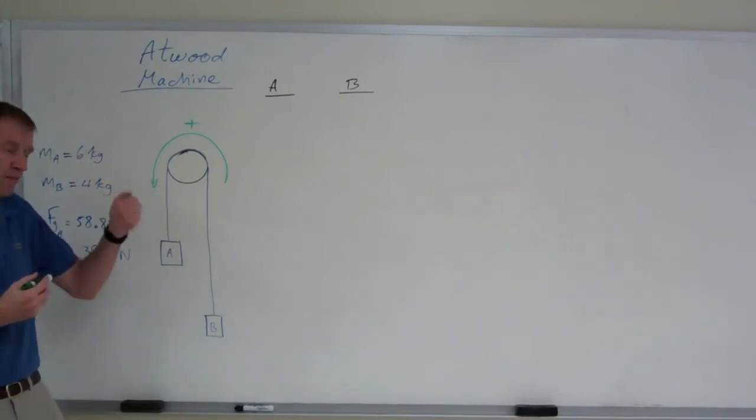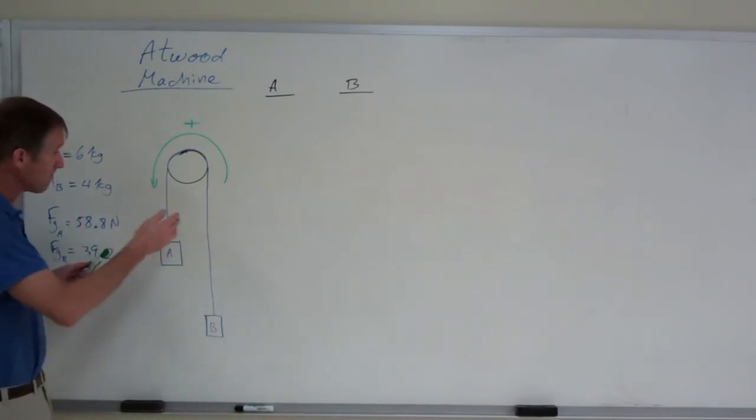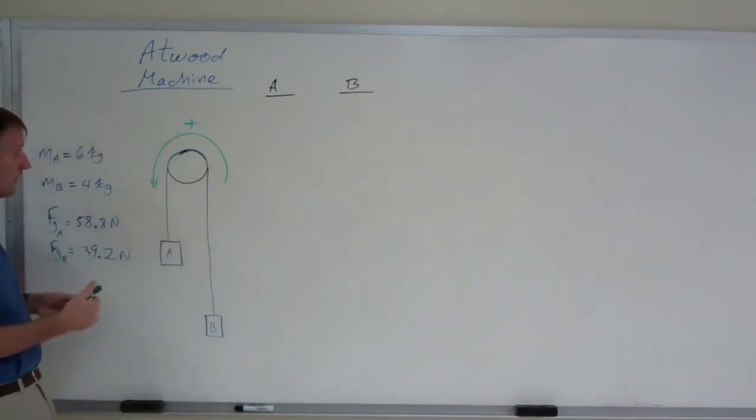There is, in more advanced physics, there is a rule of thumb: counterclockwise is positive, clockwise is negative, but don't worry about it. For the honors class, whichever way it's naturally going to go, just make that weight positive. It's easier to handle.